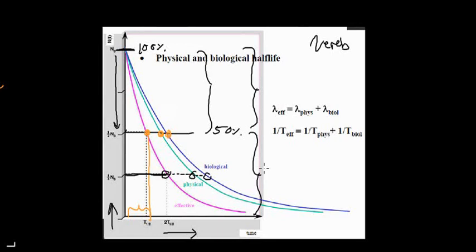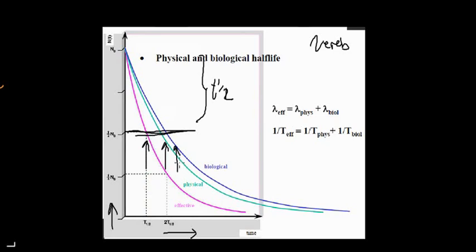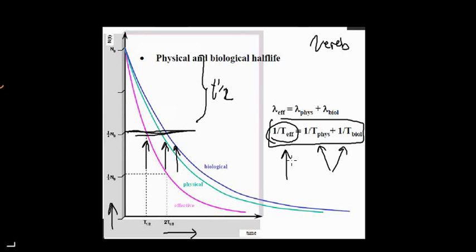This holds at any point on the graph: whether I'm looking at 50% or any subsequent half-life interval, it always takes less time to reach that level via the effective half-life. You can keep halving the material — half, then half again — indefinitely. The essential point is that effective half-life is the combination of physical and biological half-lives, and therefore it is always the quickest measure of how rapidly a substance is reduced by half in a biological system.